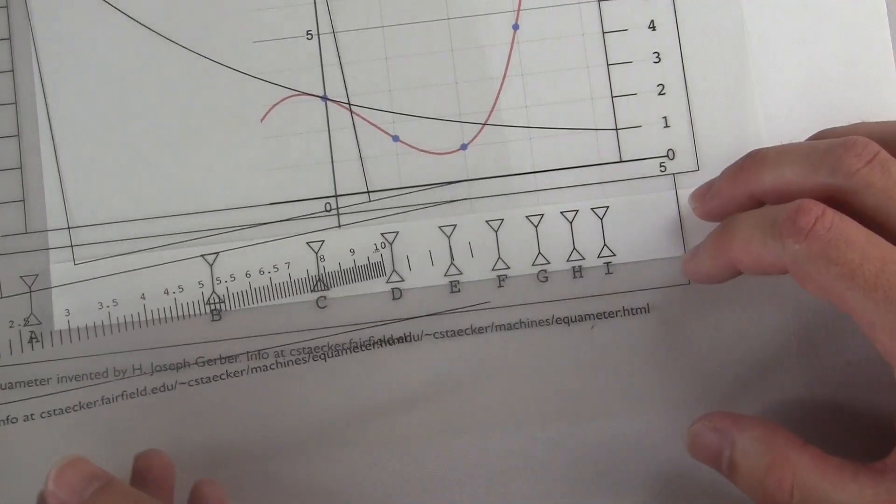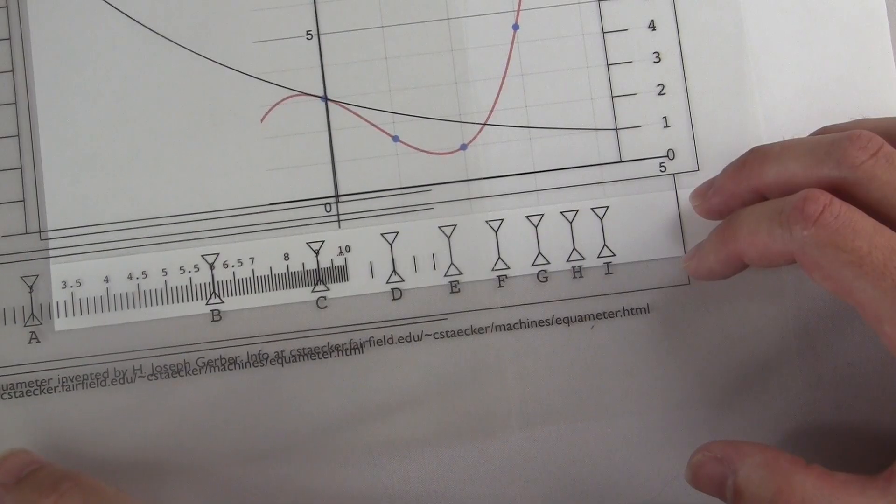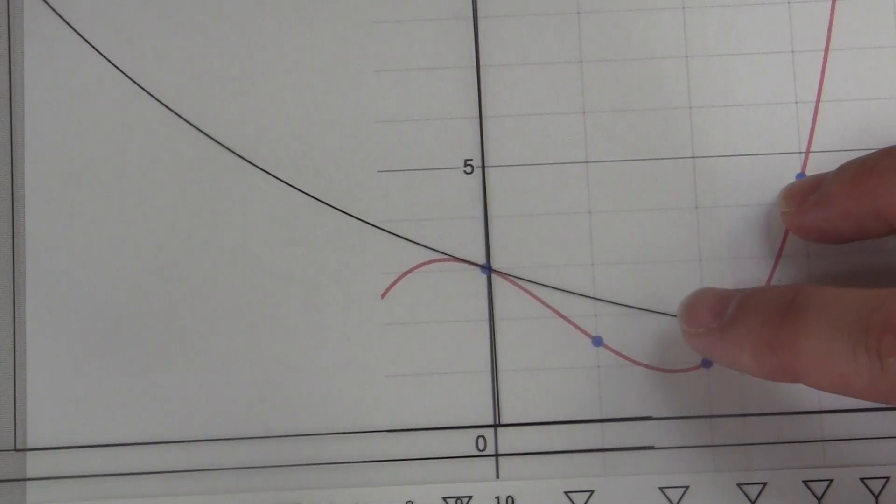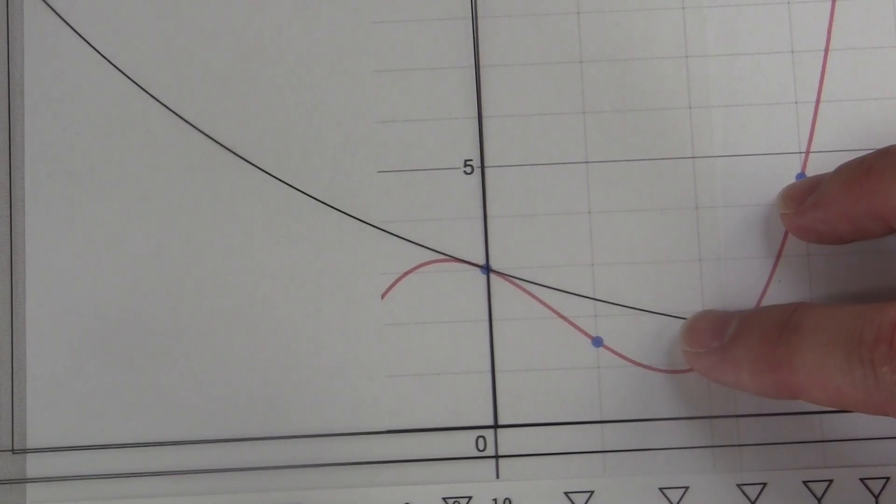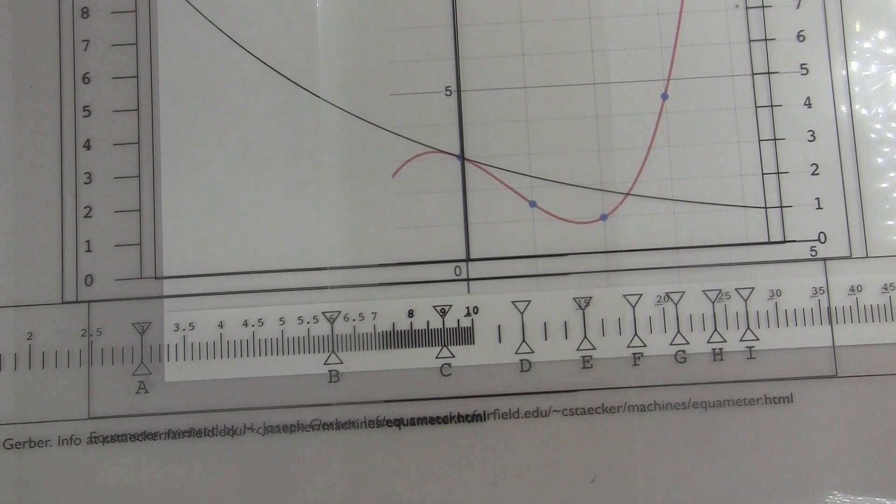Things like the equimeter don't exist anymore because nobody needs them. Nowadays, data is collected and stored digitally. You could print it out if you wanted to, but the real information isn't on the picture. It's in the computer. And that same computer can be used to analyze it much better than any instrument on paper.